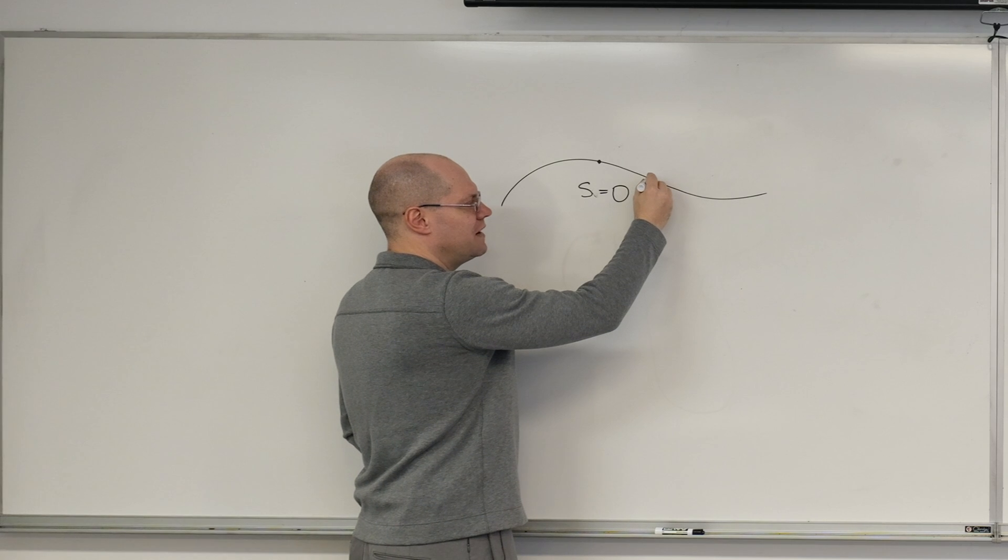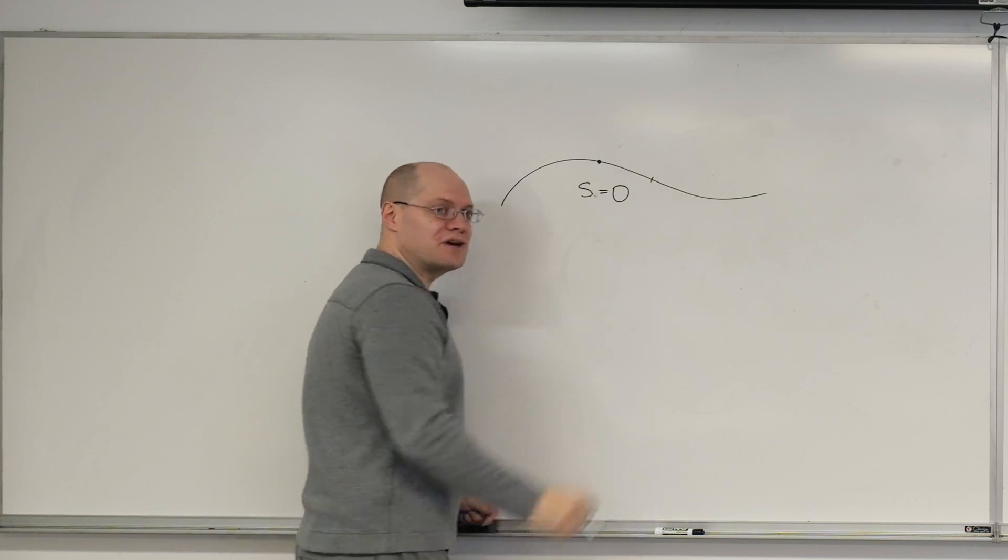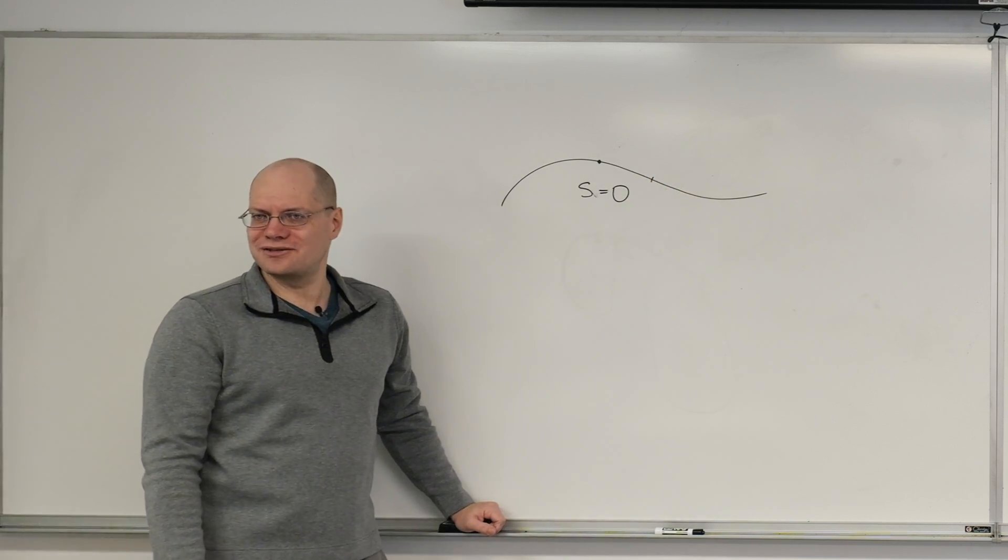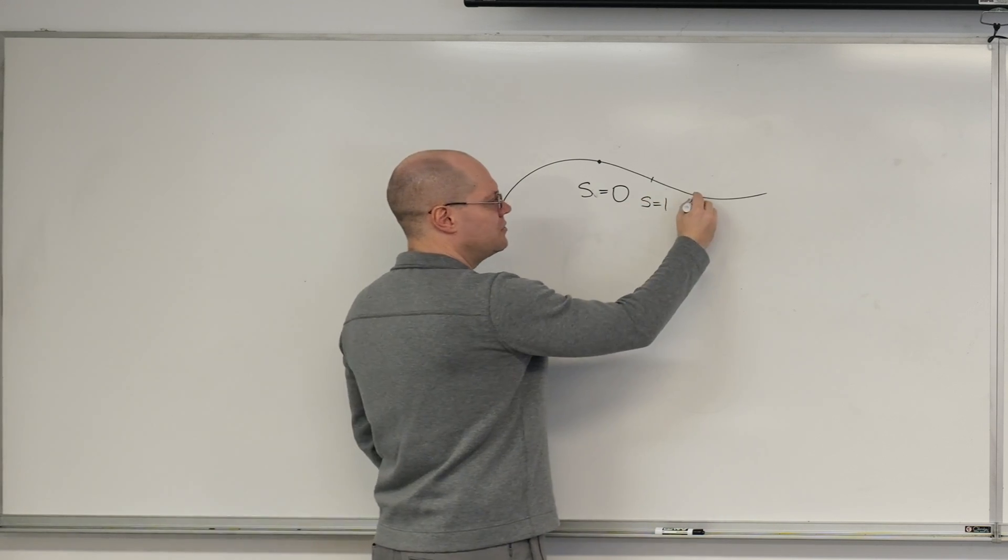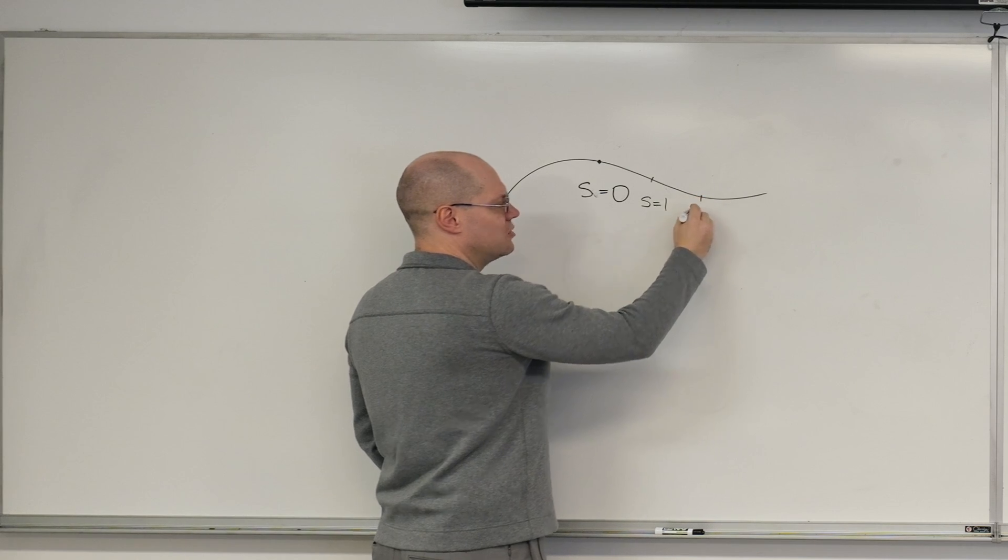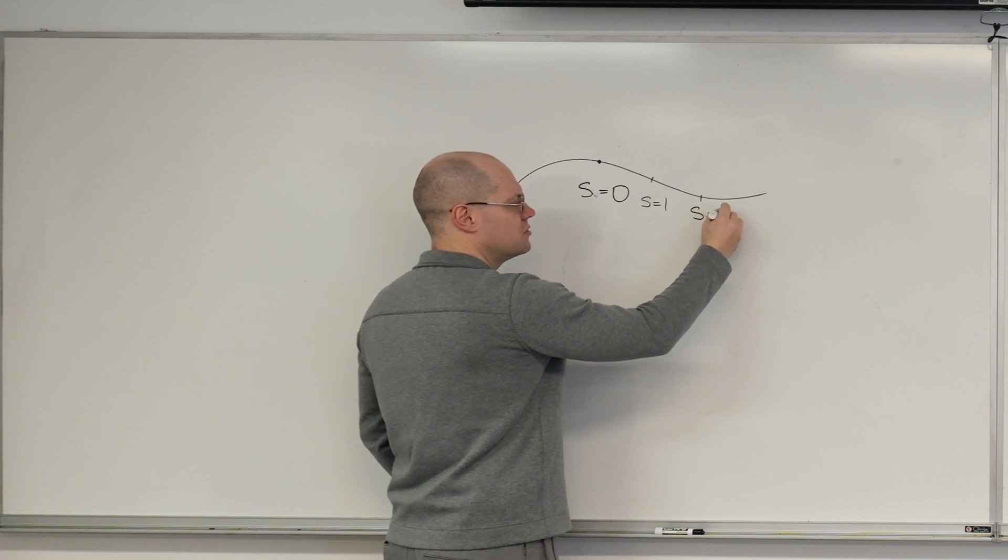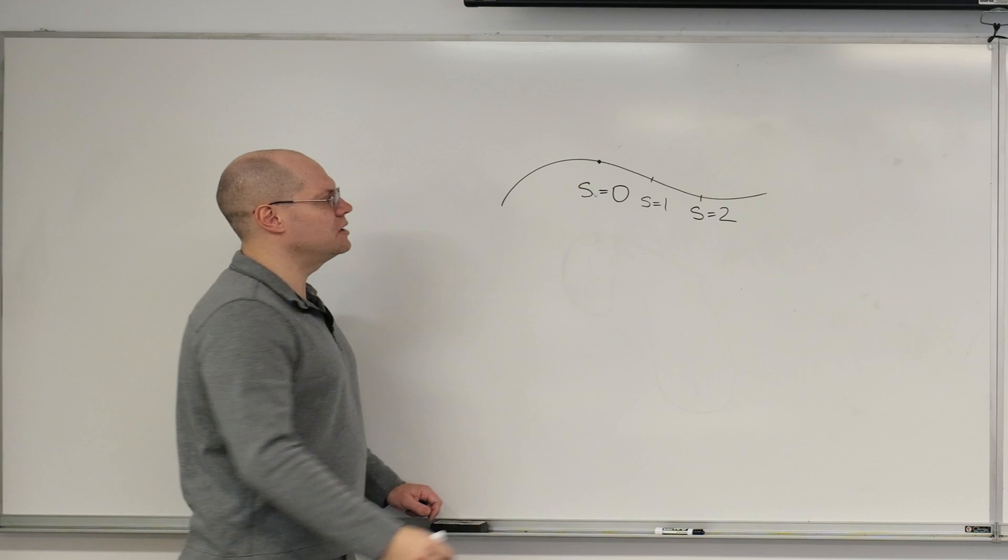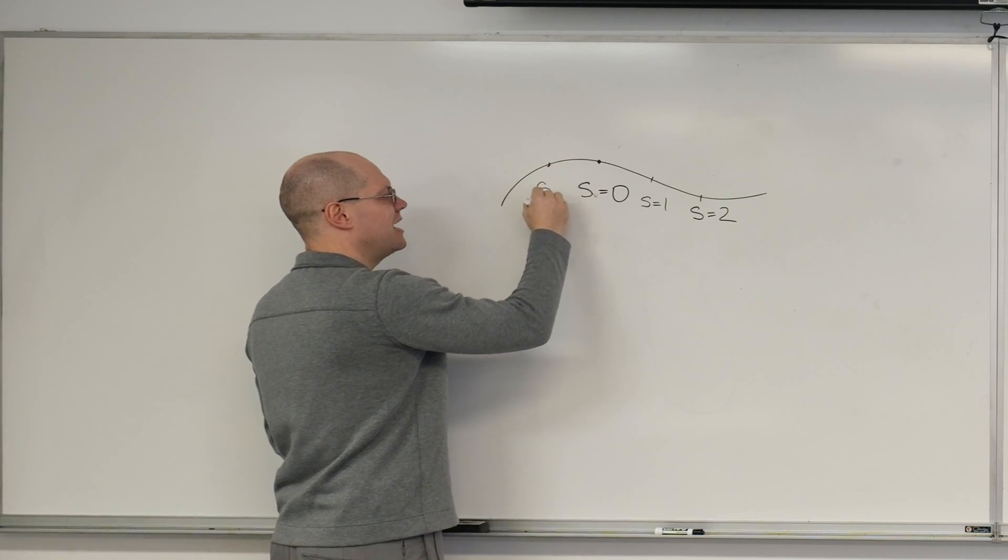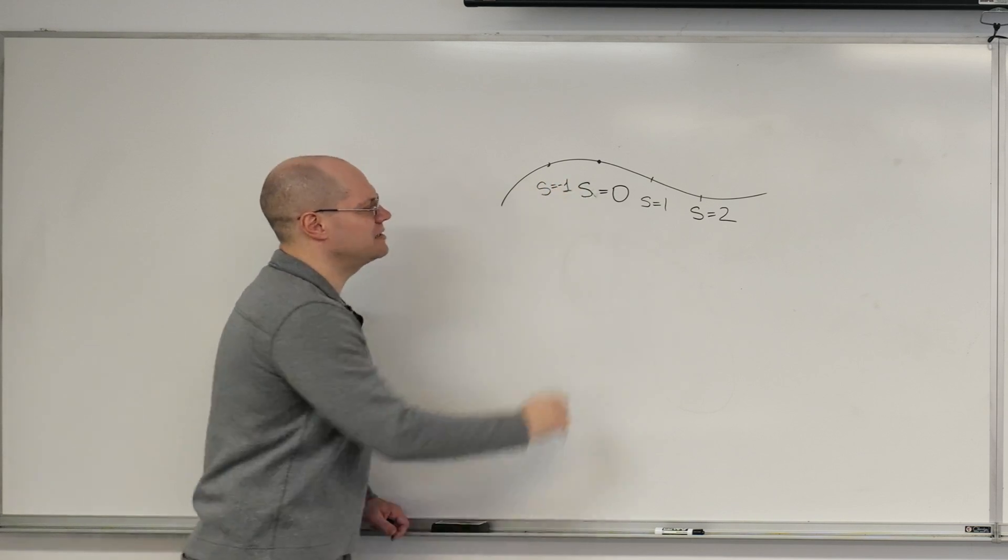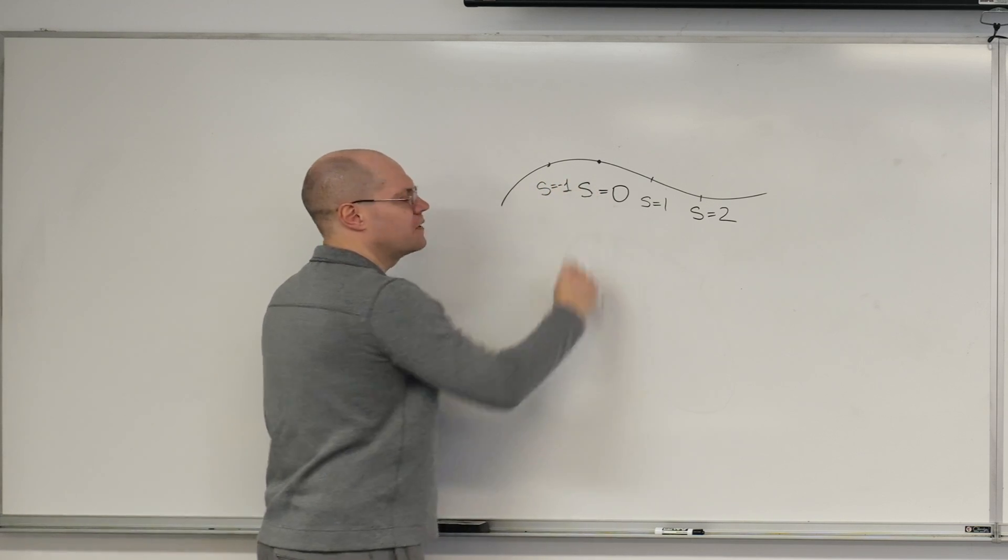Where you find that you've traveled one Euclidean unit over, that's s equals one. When you've traveled two Euclidean lengths over, that's s equals two. And when you go in the opposite direction, it picks up a sign. So it's like signed arc length, where this is s equals minus one.